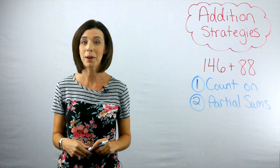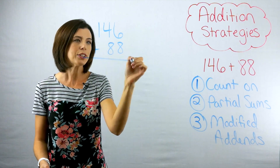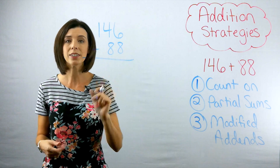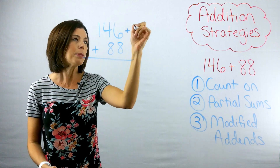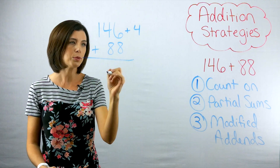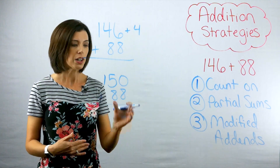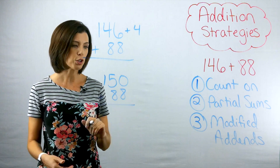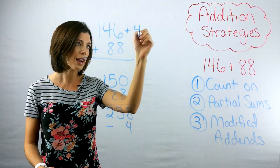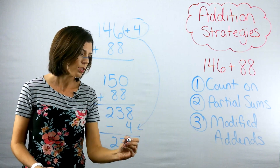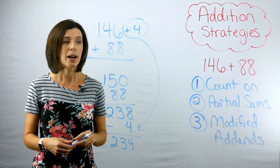The last strategy is called modified add-ins. I have 146 plus 88. It's too bad this isn't a friendlier number — if it were 150 that would be much easier to add. So I'm going to add four to 146, changing my problem to 150 plus 88. Now I can't just add something without subtracting it later, so I'll do the addition and then subtract it out at the bottom. 150 plus 88 gives me 238, and then I subtract out that same four to get 234. This strategy works better for some numbers than others, but you get the picture of how you could use it.